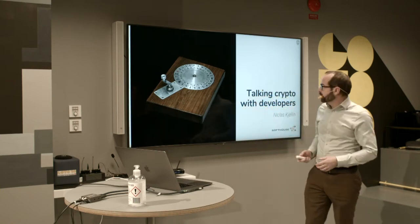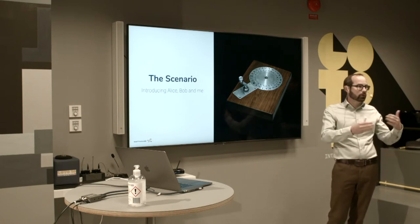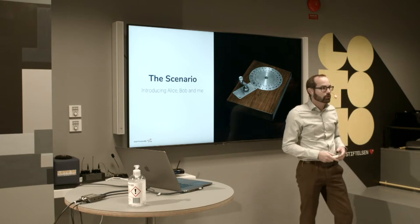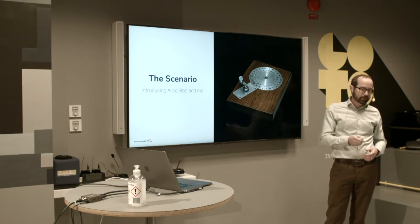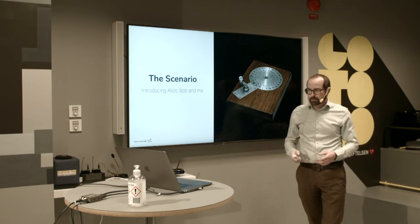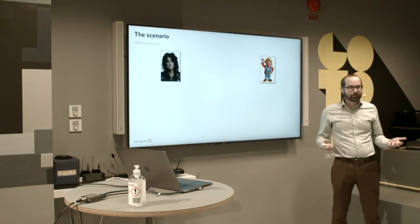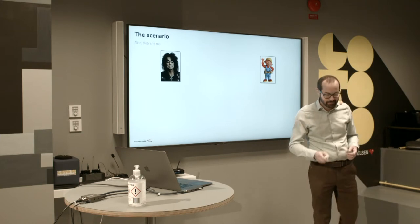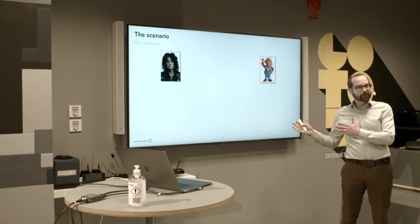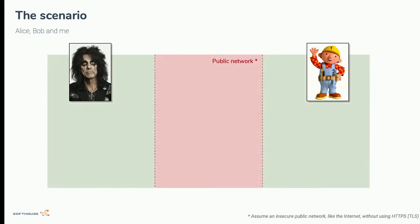I'm going to present a scenario that I'll use throughout the whole talk, building onto secure communication using the building blocks we have available. I'll introduce you to Alice and Bob. I randomly picked two images while searching for Alice and Bob — you might recognize them. They're my assistants, and the scenario is that they're going to be talking over a public network, usually the internet.